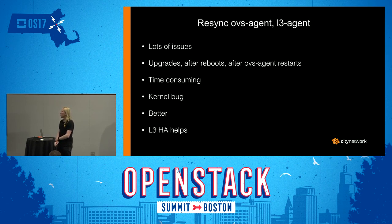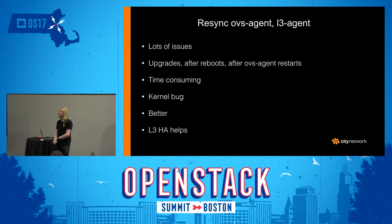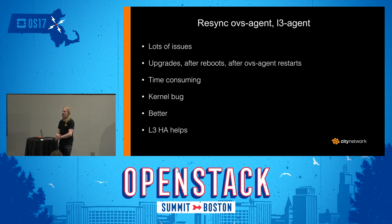Another thing we've seen lots of problems with is resyncing OVS agents and L3 agents. We've seen this both after upgrades, after reboots, after OVS agent restarts, and it has been very time consuming with disturbances on the data plane. There was also a kernel bug where creating network namespaces got slower and slower as the number of namespaces increased. That bug is fixed, but it really was affecting the resync. It's much better now — lots of work has been done on preventing data plane interruptions. And L3HA will help: if you have a problem on one node, the router will move over to another network node.